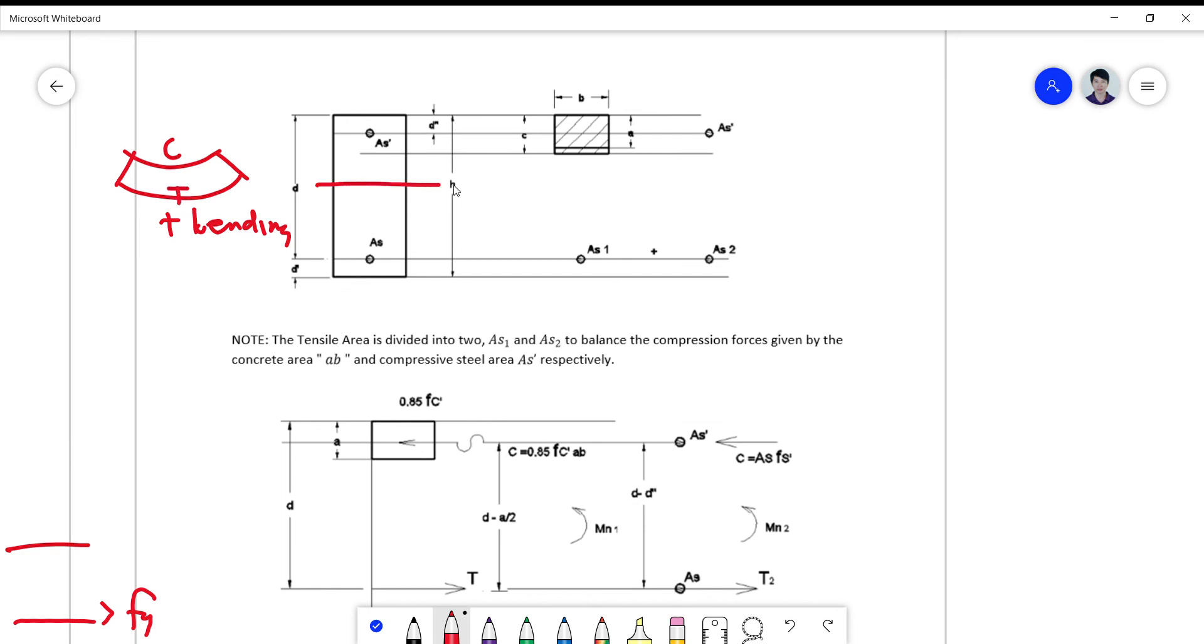This is the neutral axis. So your reinforcement tension is to be labeled as As prime.